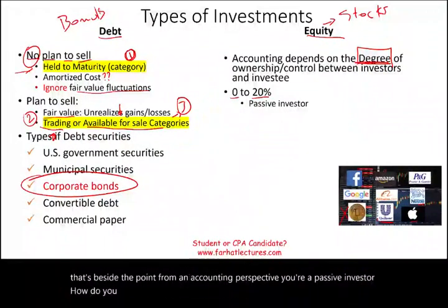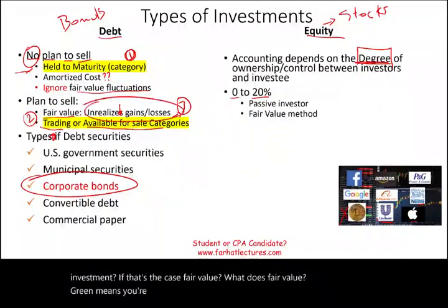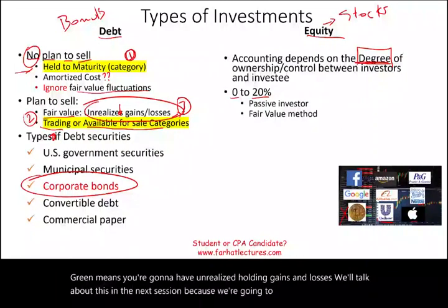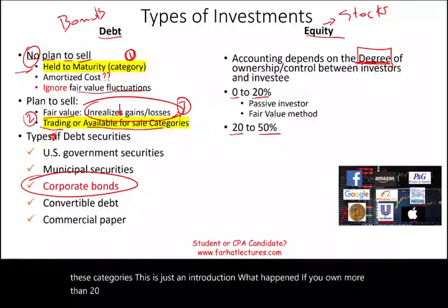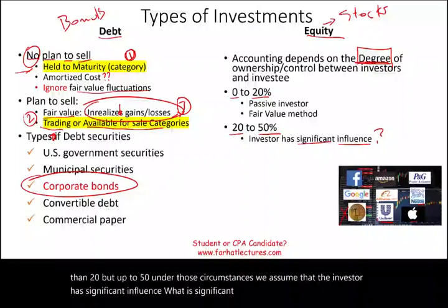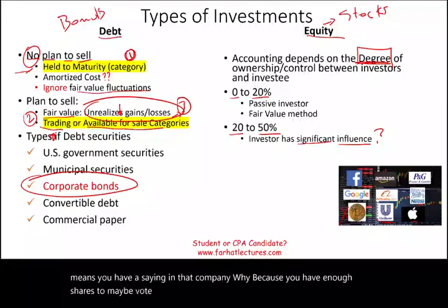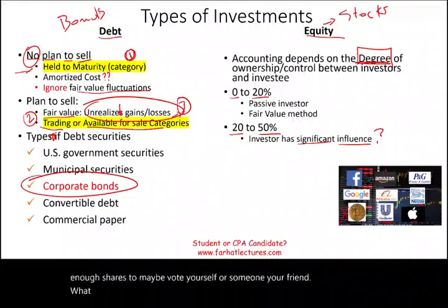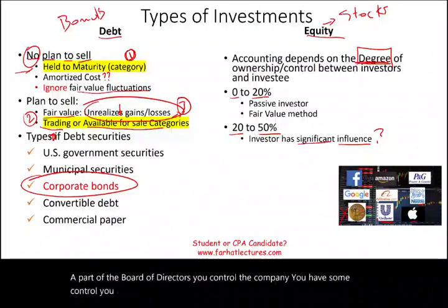How do you account for your equity investment if you're a passive investor with less than 20%? You use fair value, meaning you'll have unrealized holding gains and losses. What happens if you own more than 20% but up to 50%? Under those circumstances, we assume the investor has significant influence — meaning you have a say in that company because you have enough shares to vote yourself or an ally onto the board of directors, giving you some control.